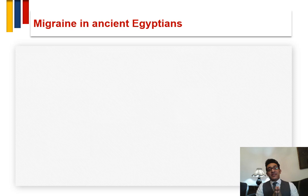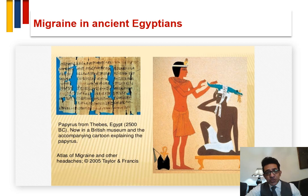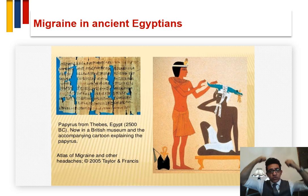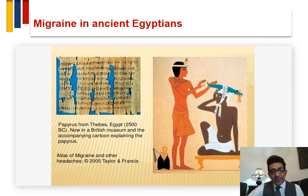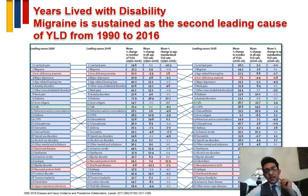Surprisingly, the ancient Egyptians had described migraine. As we see here in this papyrus, this Egyptian doctor is trying to treat migraine by tying a crocodile around the patient's head. The crocodile is biting some herbs in its mouth. This papyrus is not available in Egypt — it is now in the British Museum in the UK.